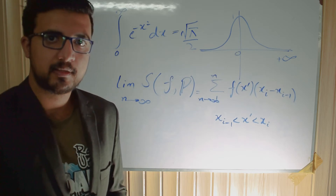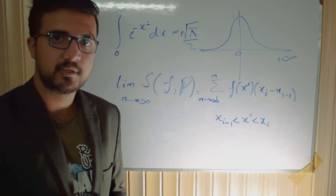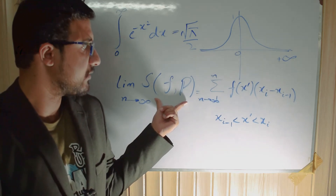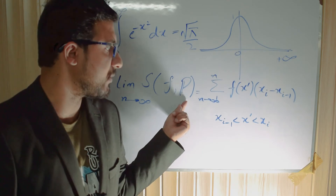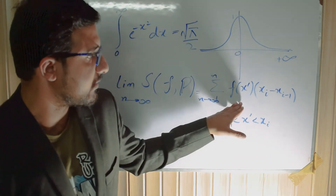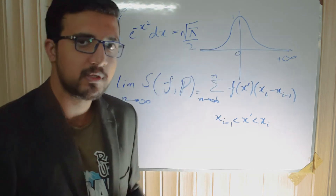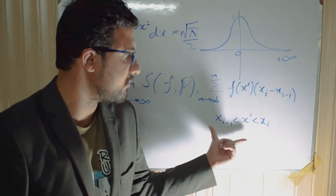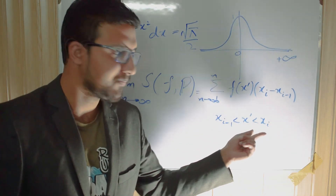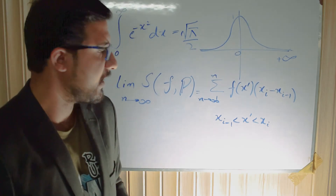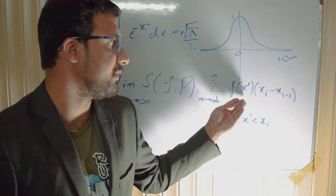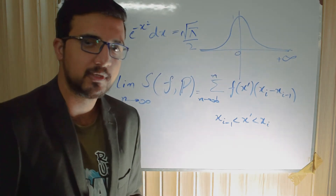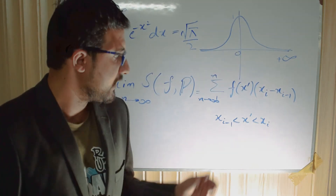According to my understanding, the answer lies in how we define our integral using the Riemann sum. The Riemann sum states that the sum of the function over some partition equals this expression: we evaluate the function at some tagged point x-bar, where x-bar lies between x_{i-1} and x_i. This delta x is the width of the rectangle, and the height is the function value at x-bar in the interval [x_{i-1}, x_i].